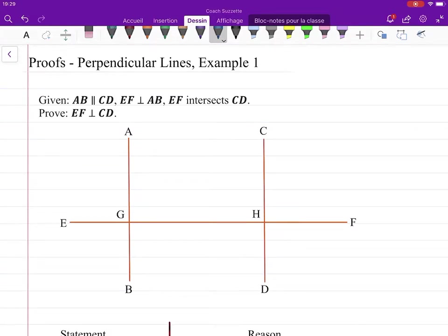Hello and welcome back. Let's do a proof. We're given AB is parallel to CD, EF is perpendicular to AB, and EF intersects CD. Prove that EF is perpendicular to CD.